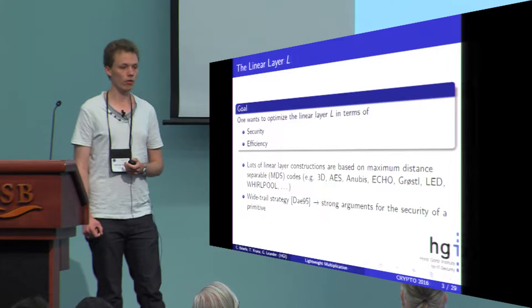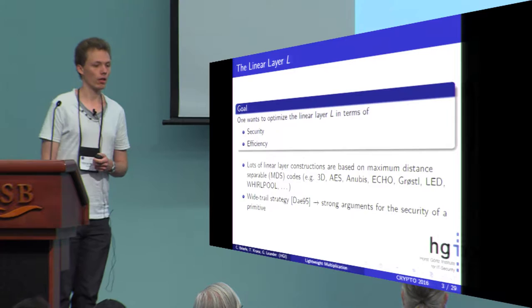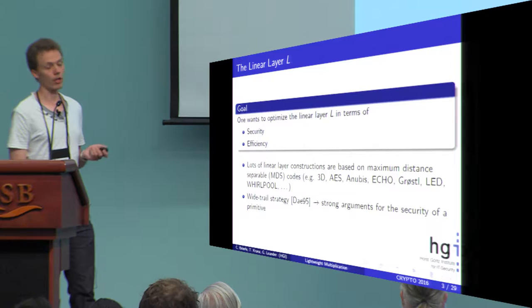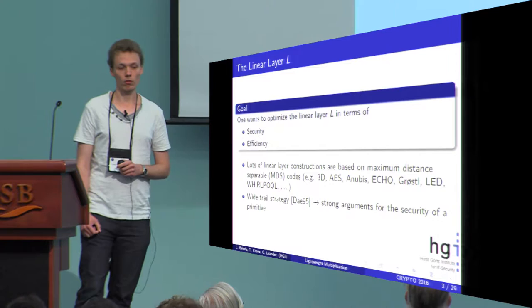Lots of constructions of linear layers we know are based on so-called maximum distance separable codes, also called MDS codes. Lots of ciphers follow this approach, for example the well-known AES. The advantage of this code-based approach is the so-called wide-trails strategy, which allows for strong arguments on the security of a primitive.